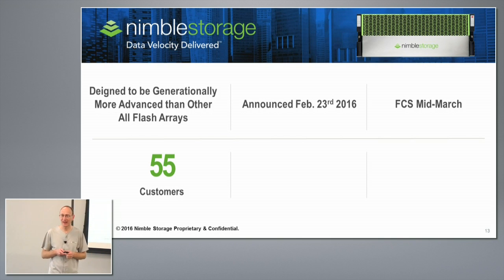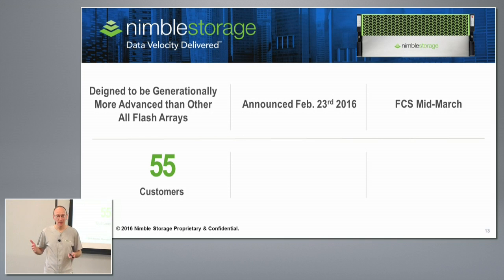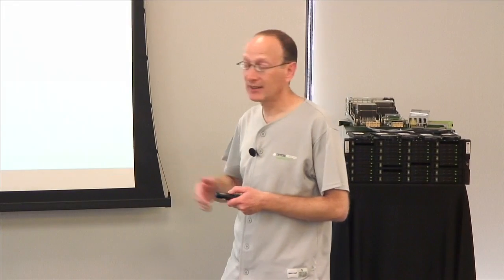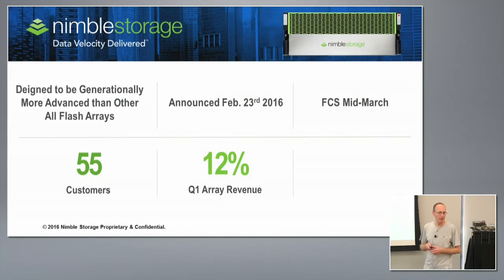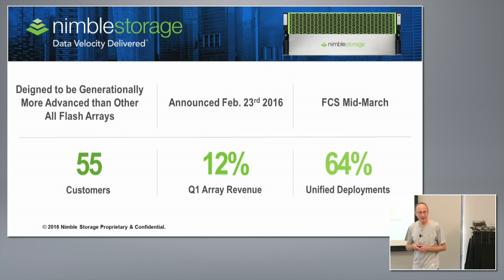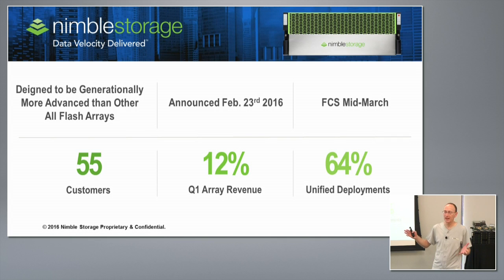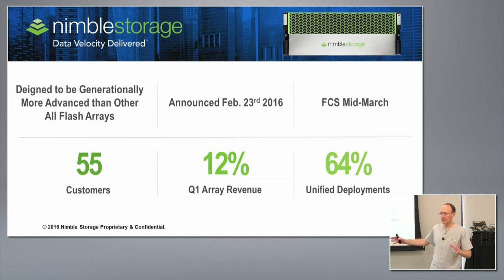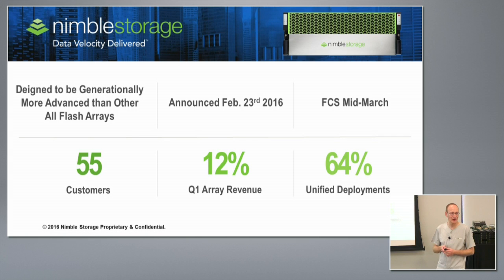We had 55 customers buying all-flash arrays, some multiple. About half of them were new customers — in almost every case, these were highly competitive deals against the best all-flash array competitors. The second data point: 12% of our array revenue came from all-flash in just the first half-quarter of shipping. And 64% of customers — both new and existing — were what we call unified deployments, validating the whole unified flash fabric design. Customers either split production across all-flash and adaptive, or bought all-flash for production and adaptive for DR at about a third of the cost.